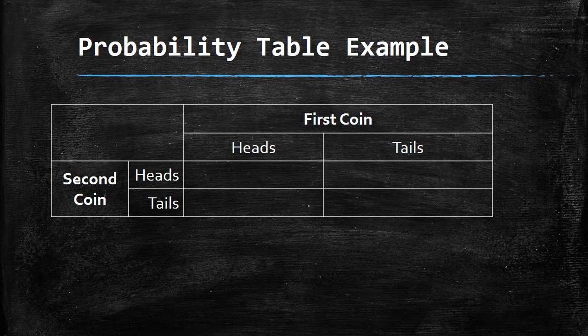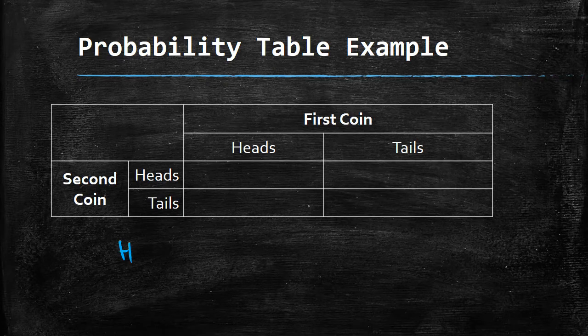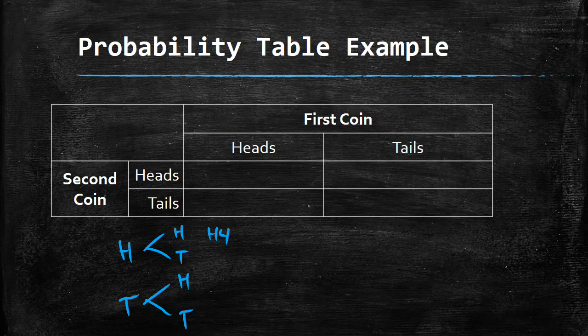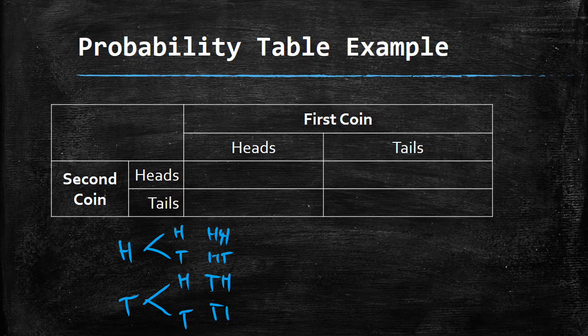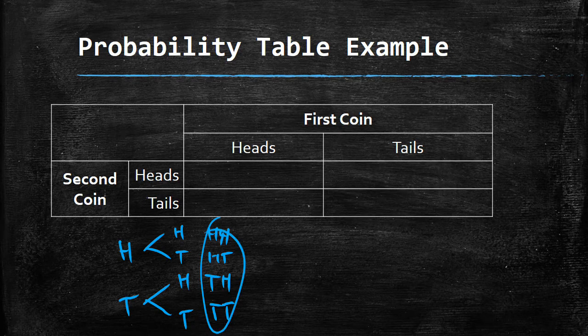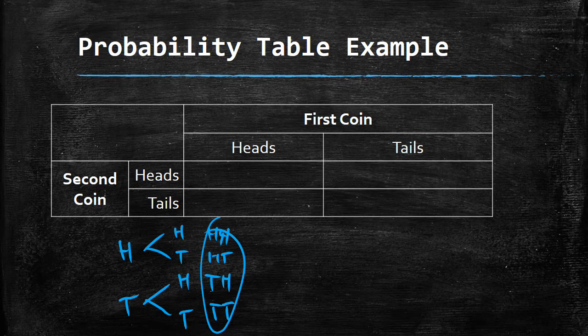To do this with a probability tree, we would have went heads and tails, and then we would have known the second one, we could have had a heads or tails, and then a heads or tails, and we would have got heads heads, heads tails, tails heads, and tails tails. In a probability table, instead, we're going to be getting the same results here, but showing it in a slightly different way.